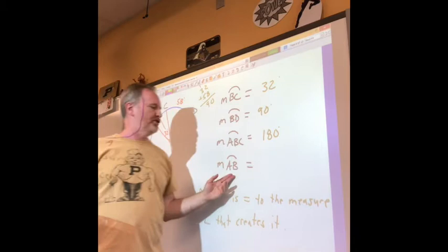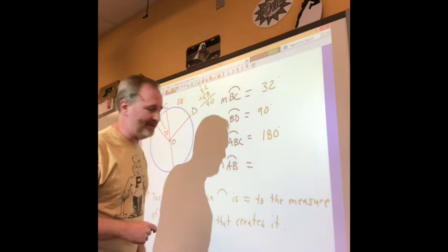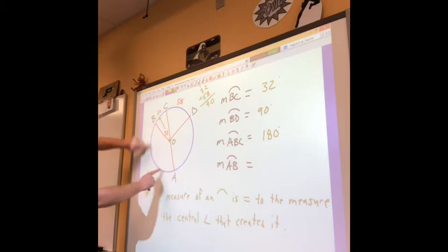ABC is that half of the circle. And last one, oh, another two letter name. Two letters again means it's going to be smaller, it's a smaller arc because it's only got two letters. A to B, okay, so A to B. Oh, there's no markings. There's no central angle mark, there's no marking out here, so we got to do some math.